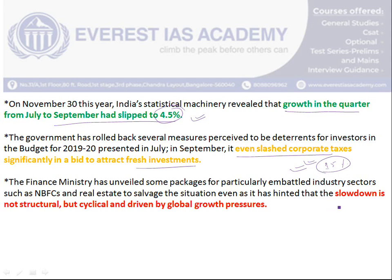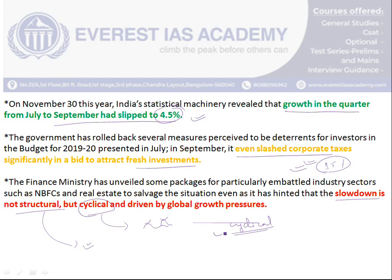The article argues that the current slowdown is not structural but cyclical. Cyclical means that the slowdown follows a cycle — when the revival comes, the economy returns to normalcy on its own. If it were structural, we would need structural reforms like GST and financial sector reforms. As of now, experts say we should not be too worried because the growth is cyclical, though the government should take some initiative to accelerate recovery.